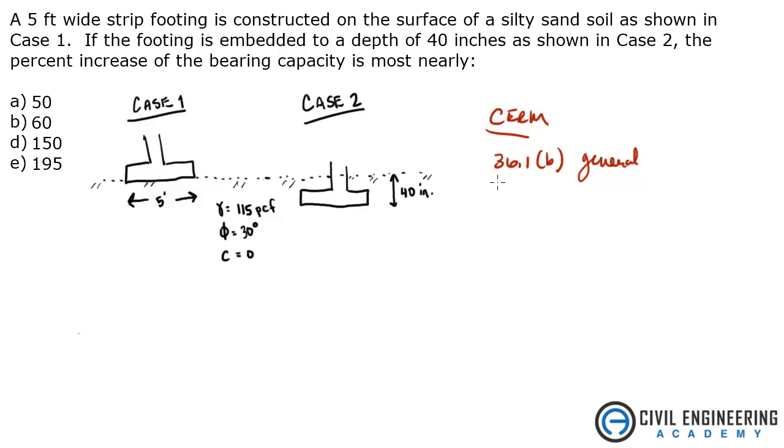But for sand, we're going to go to 36.9b and that is the bearing equation in sand. So what that gives us is it tells us that q is equal to cNc plus gamma df Nq plus 0.5 b gamma N gamma.